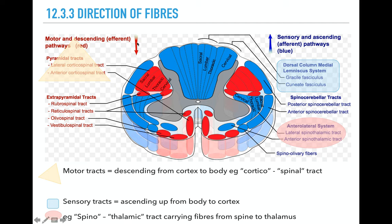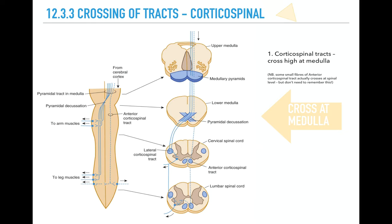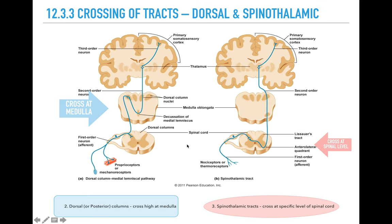It's important to recognize that motor fibers come down from the brain to the spine — that's why it's called the corticospinal tract, cortex to spinal. Sensory pathways go from the body up to the brain. Spinothalamic tracts carry pain fibers from the spine to the thalamus in the brain. Dorsal columns and spinothalamic are both sensory pathways going up to the brain. Importantly, the corticospinal and dorsal columns both cross at the medulla, whereas the spinothalamic tracts cross at the level of the spinal cord. This is useful when learning about Brown-Séquard syndrome.